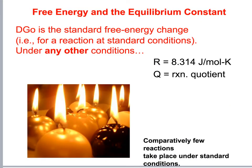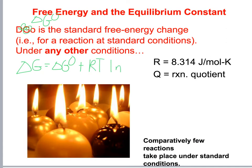Free energy and the equilibrium constant: delta G naught is the standard state free energy for the reaction at standard conditions. Under any conditions, delta G equals delta G naught plus RT times ln Q.